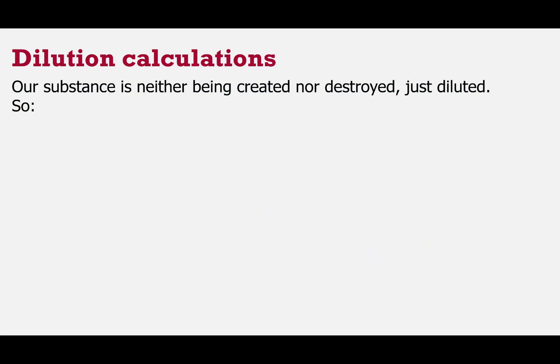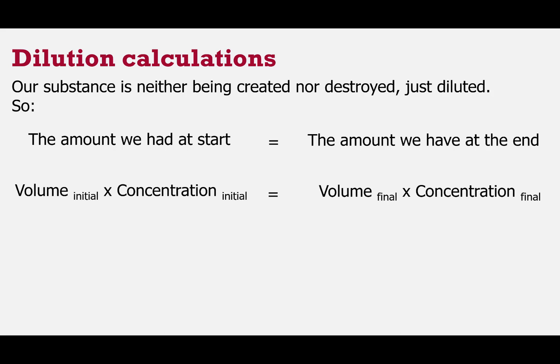So as I said then, the core to thinking about these sorts of calculations is remembering that we're neither creating nor destroying the substance. We're just diluting it. And so the amount we had at the start of a dilution is the same as the amount that we've got at the end. And to put that slightly more mathematically, the volume that we had initially multiplied by the concentration that we had initially is going to be the same as the final volume times the final concentration. We would sometimes say stock volume times stock concentration, but it's the same thing. Now that's an awful lot of writing to do in a calculation. So we would rather instead describe that as being V_i times C_i equals V_f times C_f. And that is the basis of all of these sorts of calculations.